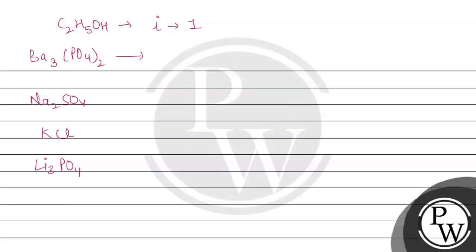Ba3(PO4)2 dissociates to give three Ba2+ plus two PO4^3−, so total ions are five, meaning i equals five. Na2SO4 dissociates to give two Na+ plus SO4^2−, so i equals three.